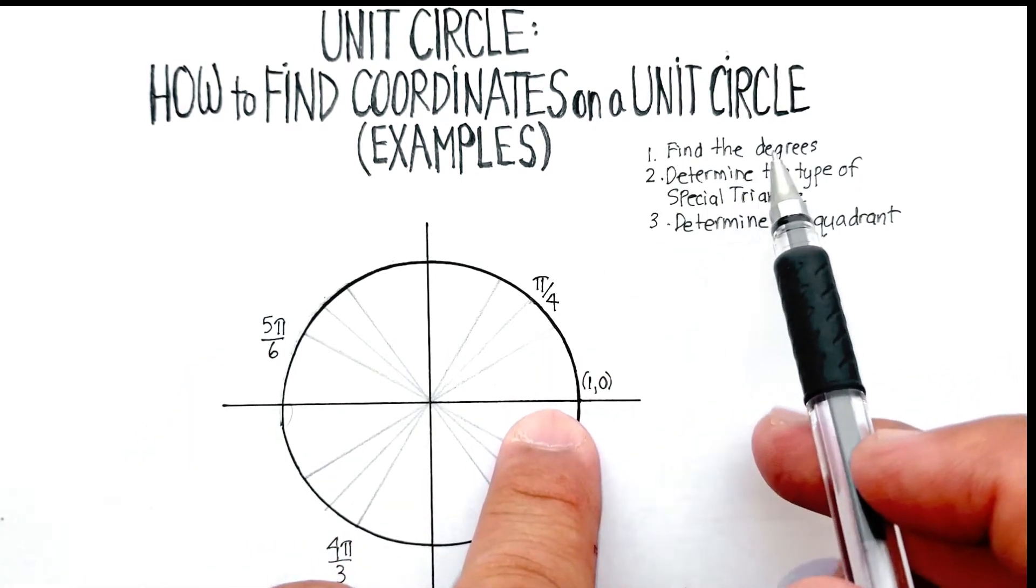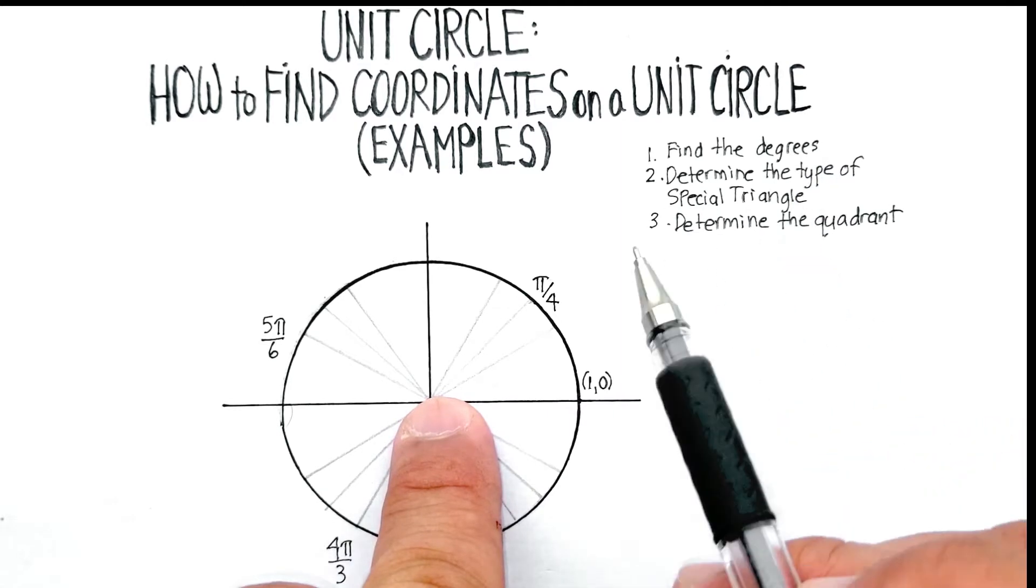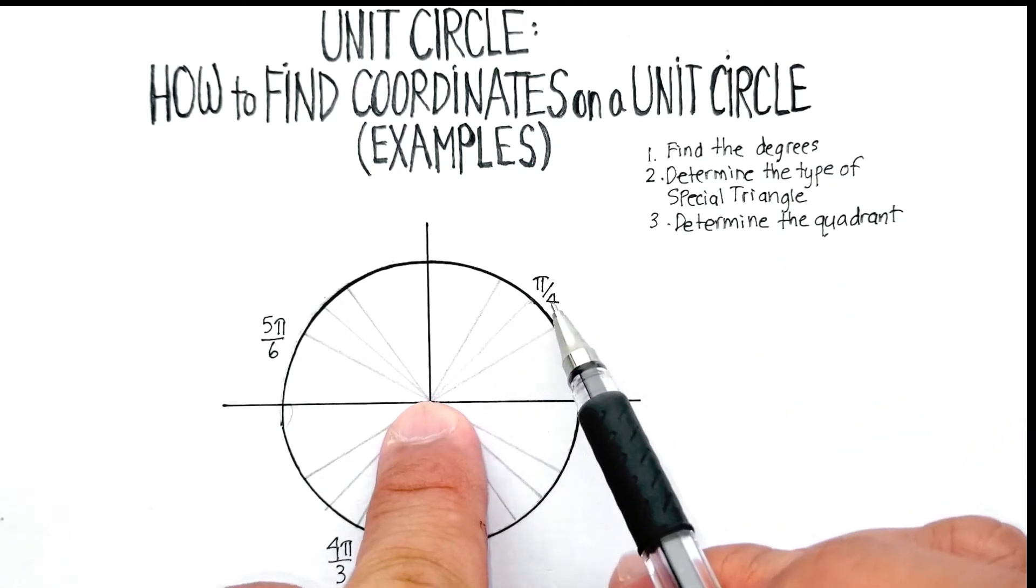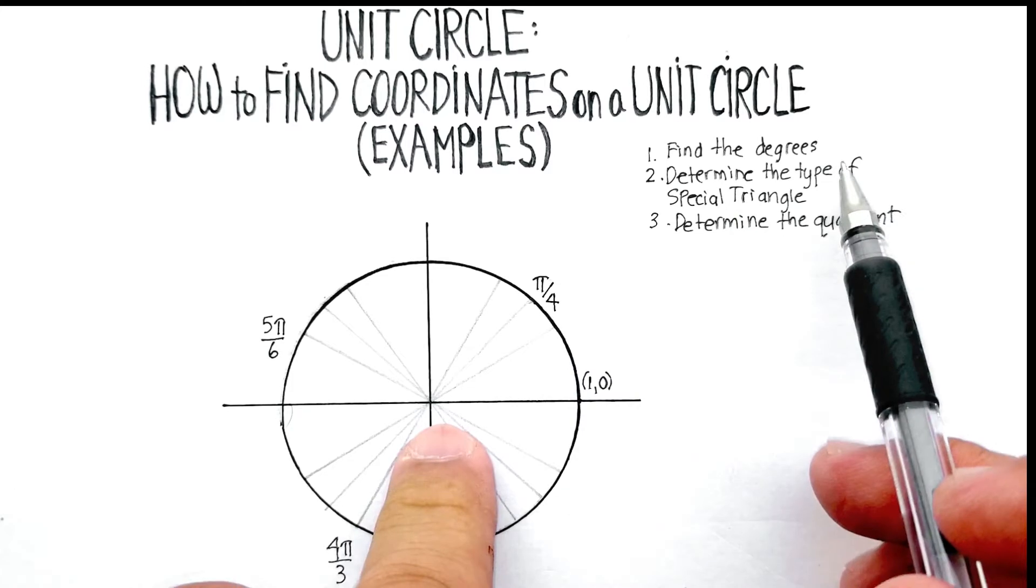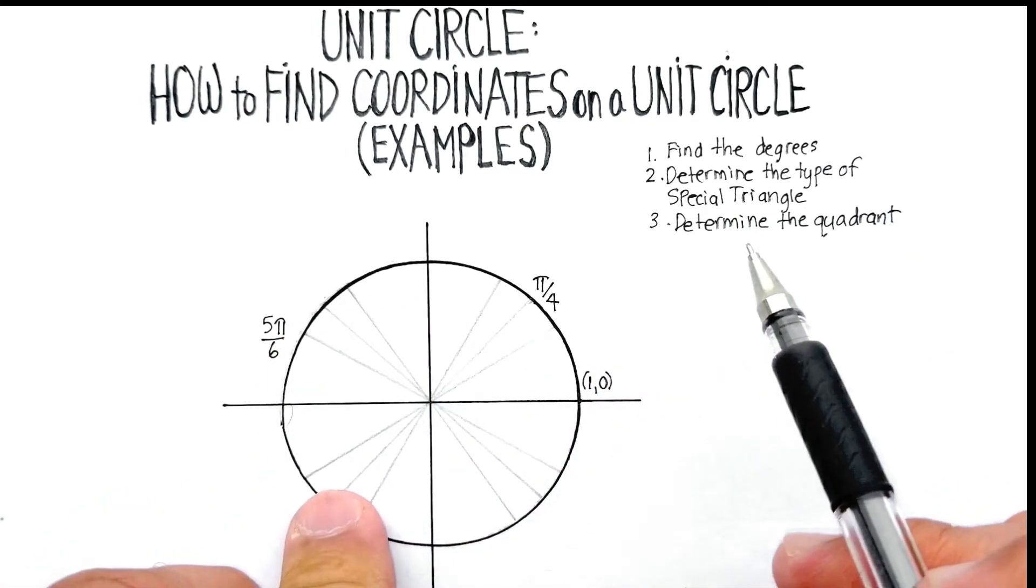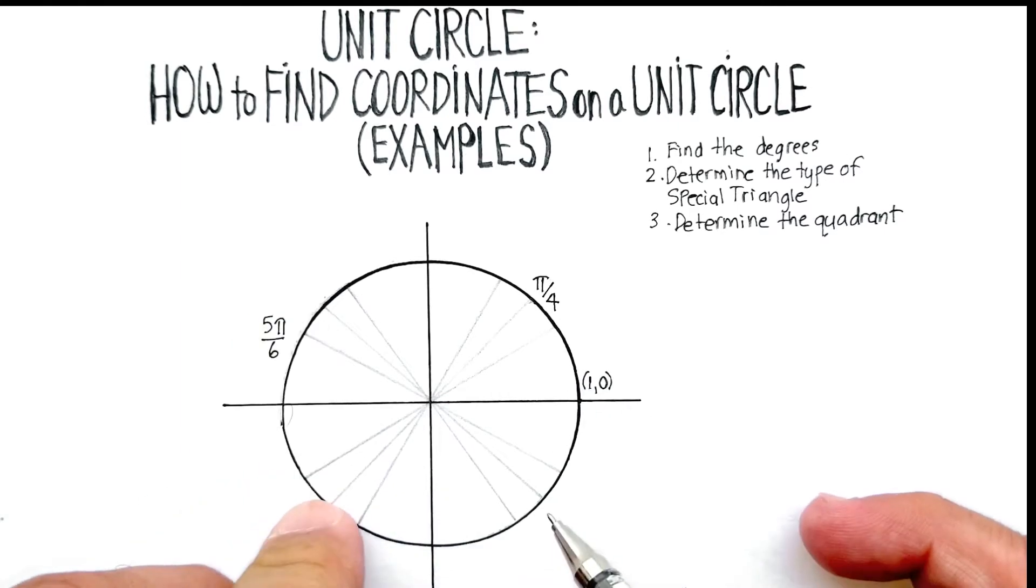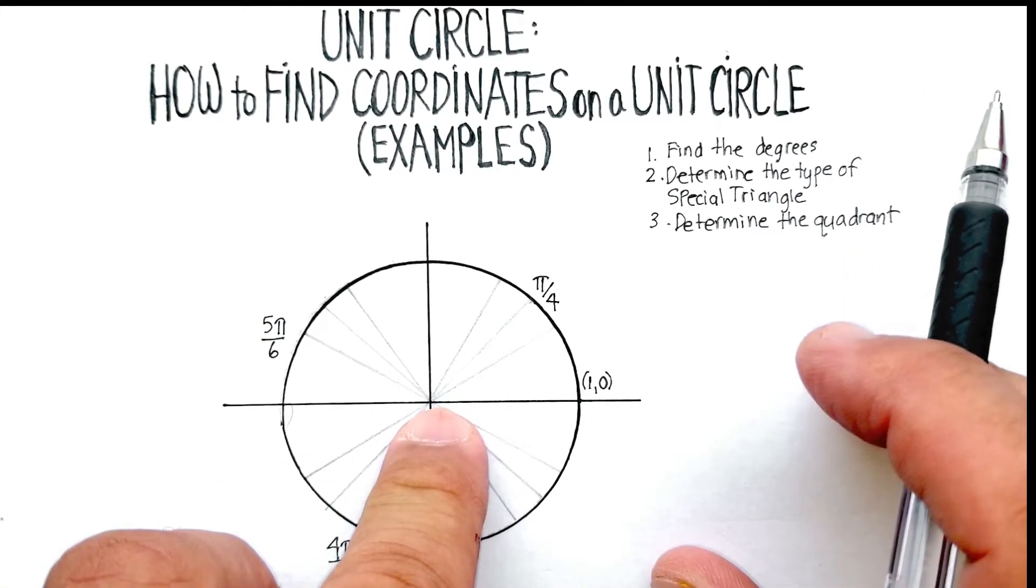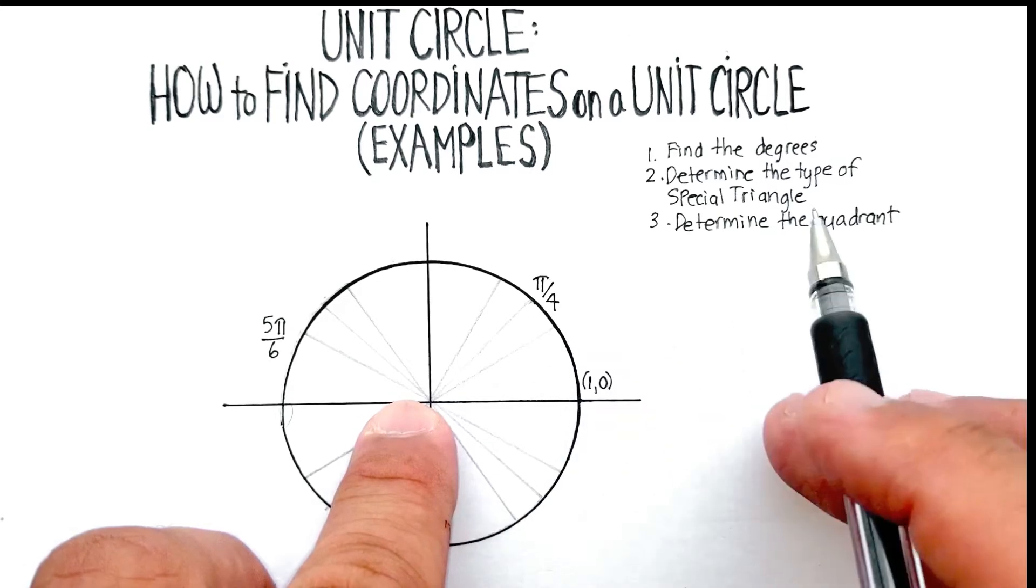Basically, one of the first things we need to do is figure out what kind of degrees are represented at those particular locations. Then you determine what kind of special triangles are represented by those degrees. And then you determine what quadrant you're in. So let's start with this first one, π over 4.